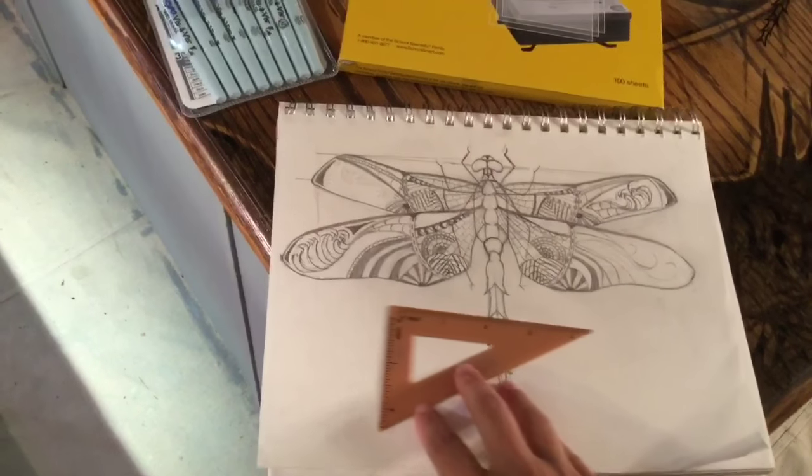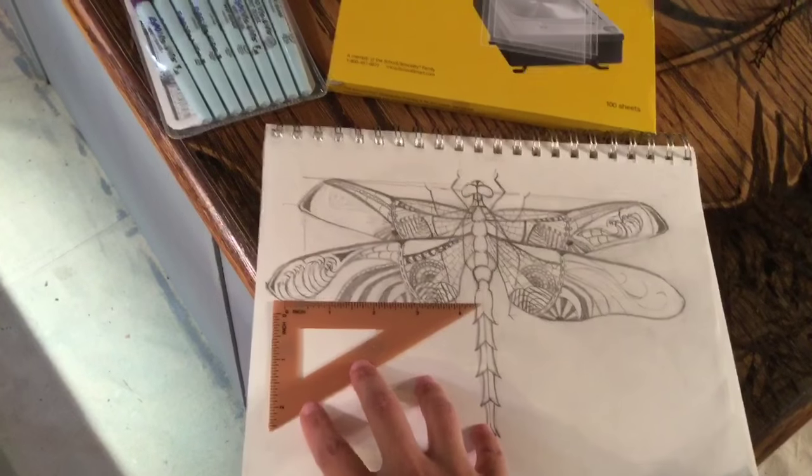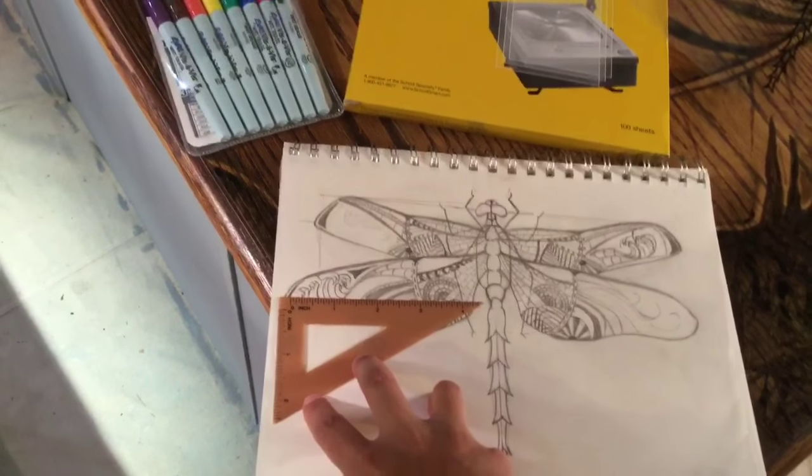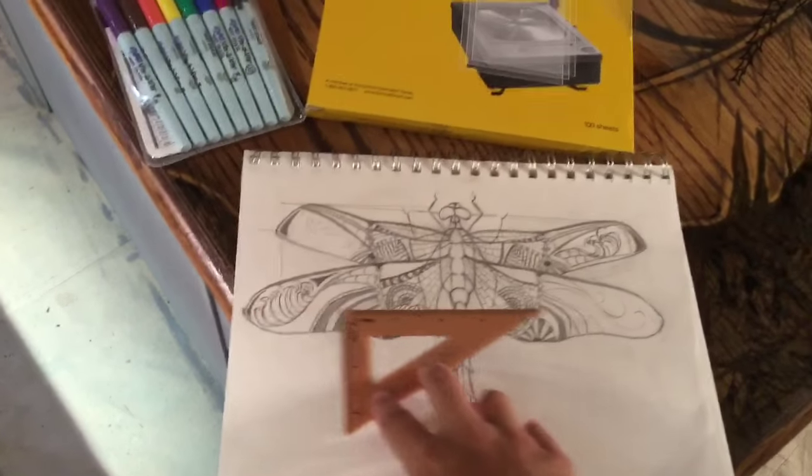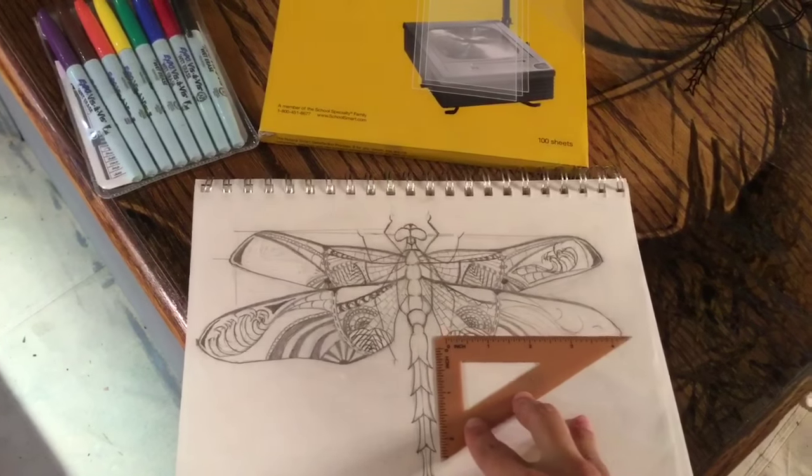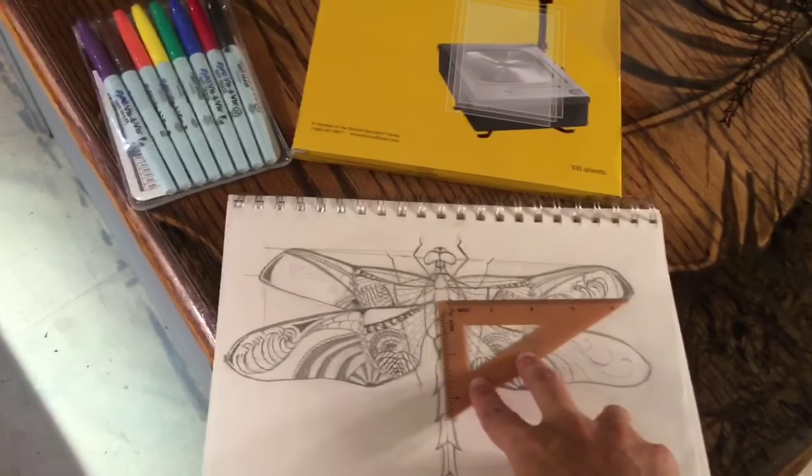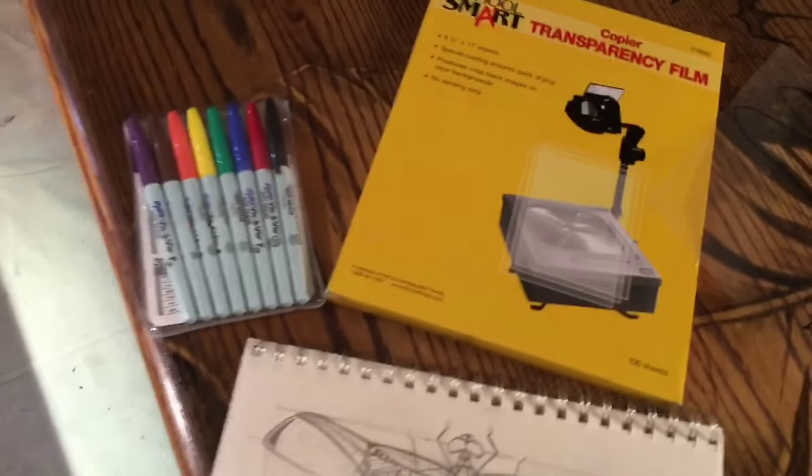So first step is draw a quick sketch in your sketchbook or on a piece of paper somewhere. I did have to bust out my straight edge for this one. I recommend you do the same thing if you're doing a symmetrical sketch. Just make sure everything matches up, everything's nice and how you want it.